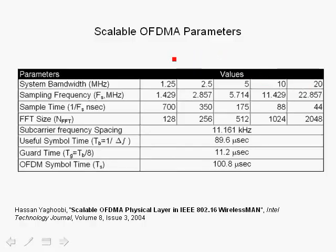To summarize scalable OFDMA: as you increase the bandwidth, you increase the number of FFT points to keep the spacing between OFDM carriers constant at 11.161 kHz. This guarantees that in the worst case — for example, a 20 microsecond RMS delay spread — you have flat fading for each carrier. And as indicated, even for vehicle speeds of 35 meters per second, the carrier spacing is adequate such that intercarrier interference due to Doppler shift is less than −24 dB.